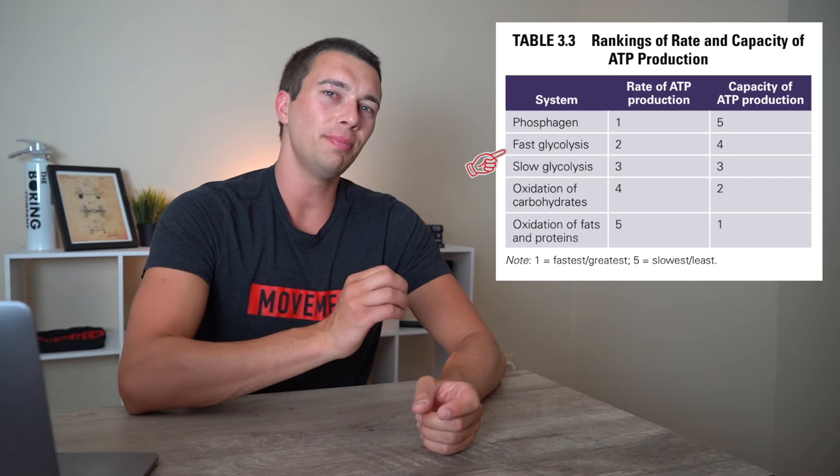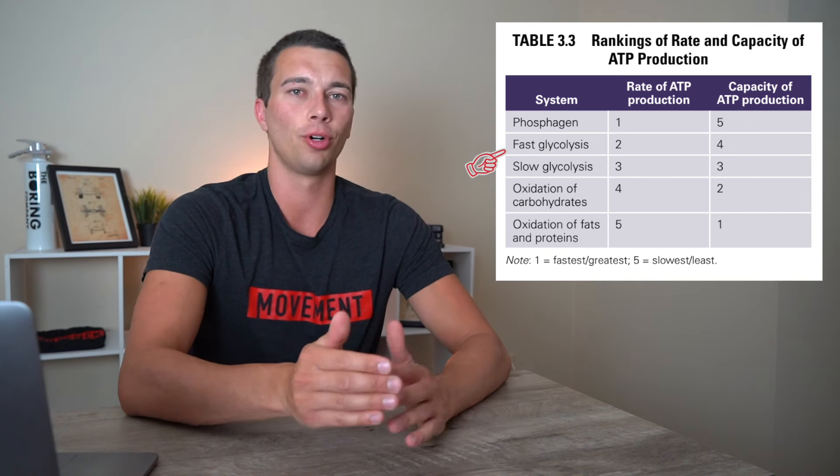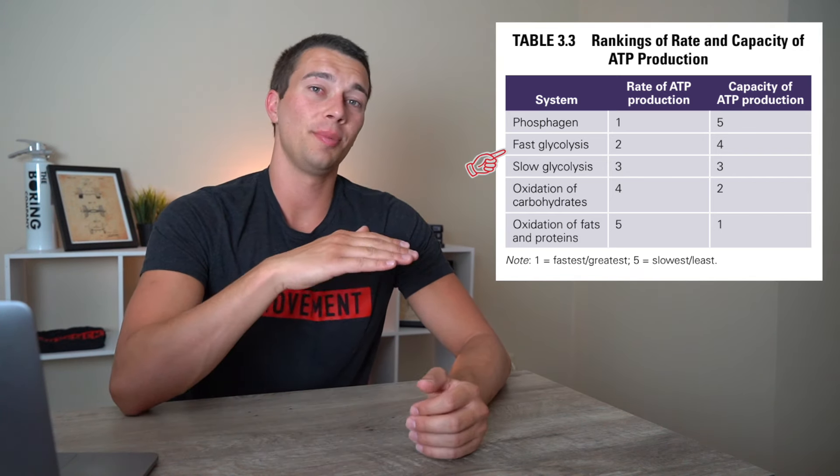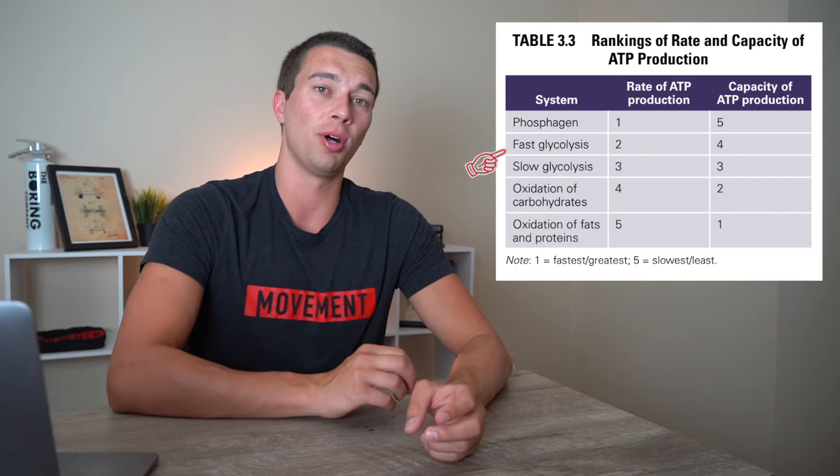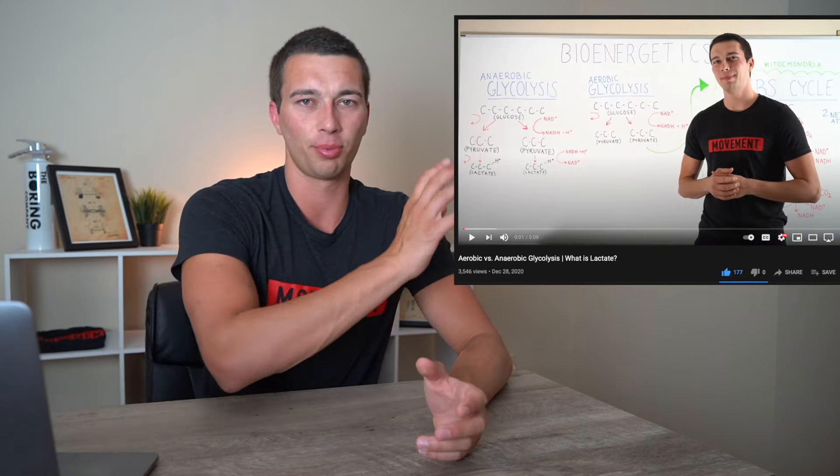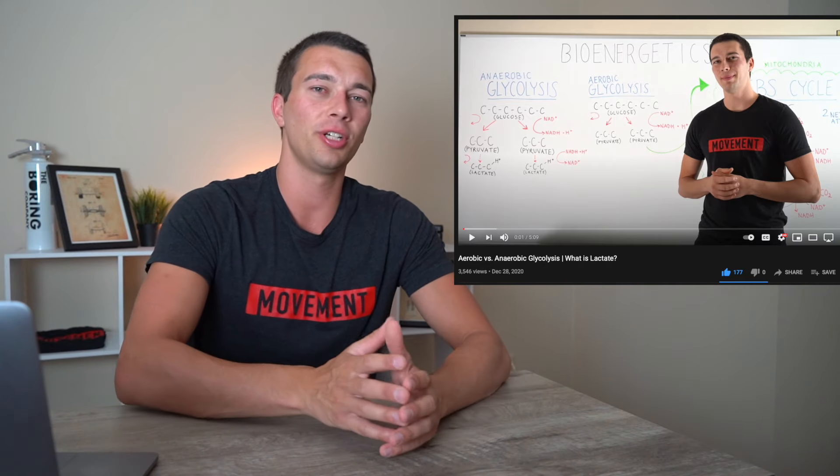Moving down to fast glycolysis, and you may have also heard of this as anaerobic glycolysis. This system is going to be the next in line. It's going to produce two net ATP per glucose molecule. And again, I have a full video that breaks this system down, but we're just going to focus on the big picture here.